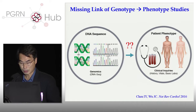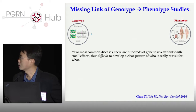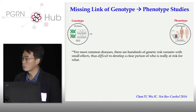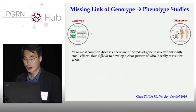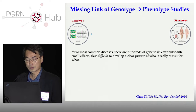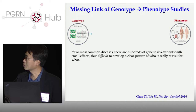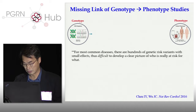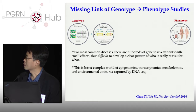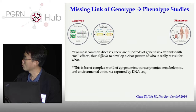Part of the reason why there's a missing link in the genotype-to-phenotype study is that for most common diseases, there are hundreds of genetic risk variants with very, very small effects. Therefore, it's very difficult to develop a clear picture of what's going to happen to our patients just by DNA sequencing them. The other reason is that there's a complex world of epigenomics, transcriptomics, metabolomics, and environmental factors not traditionally captured by DNA sequencing.